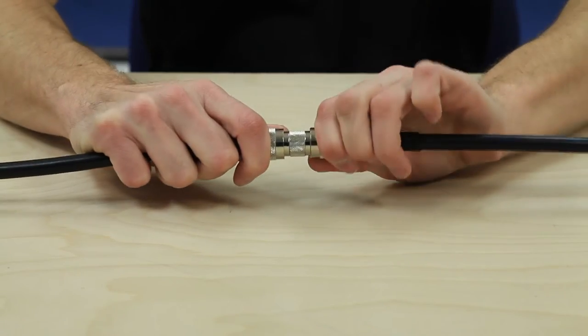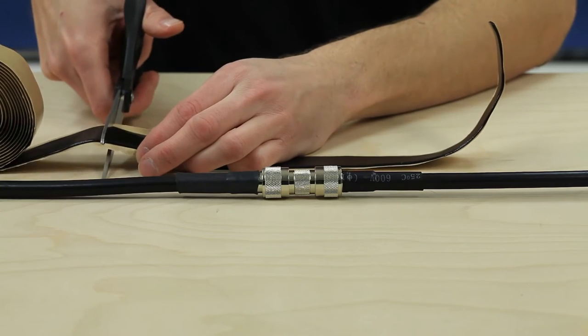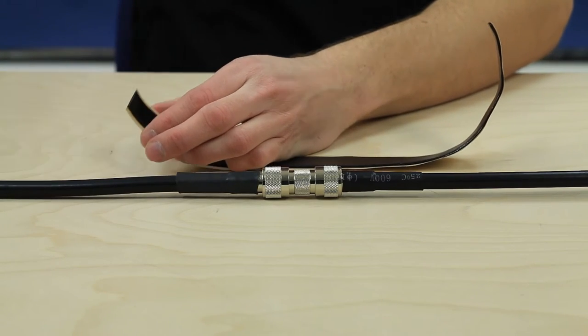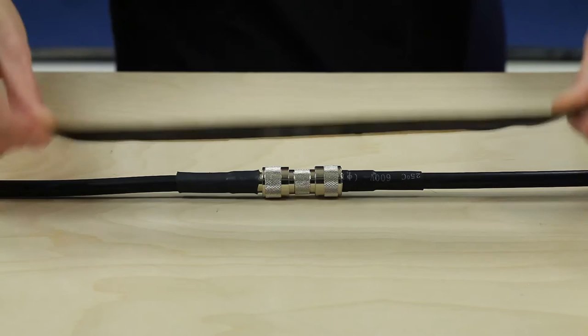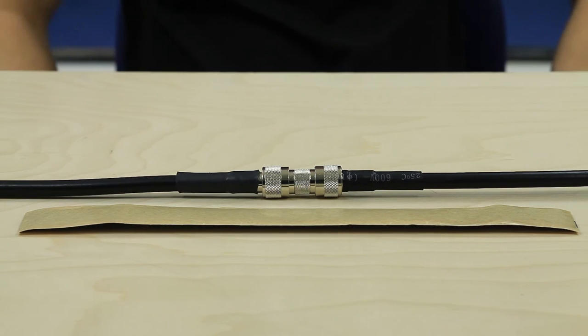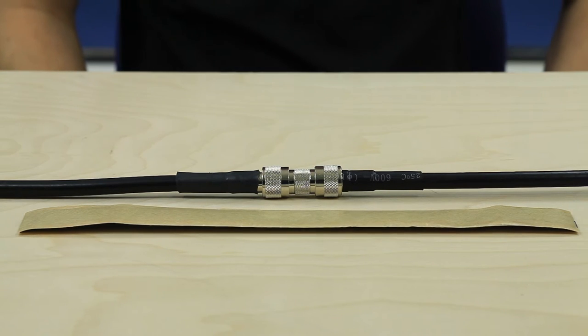To start, make sure your cable connections are secured tightly together. Cut a strip of moisture sealing tape long enough to cover the connection from about an inch below the connection to an inch above. Normally you'll need about 12 inches of tape to do the job.